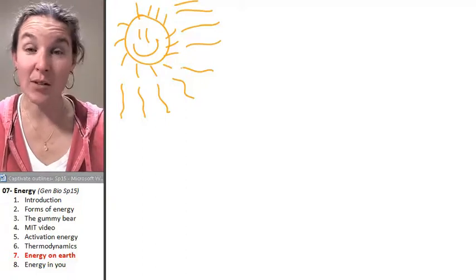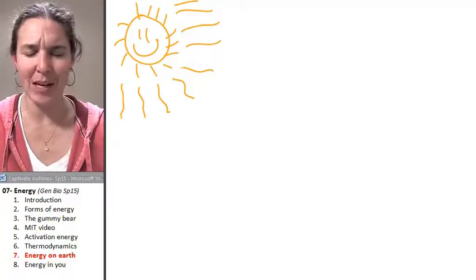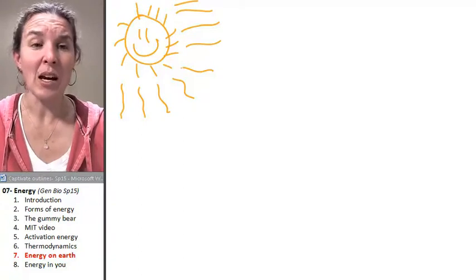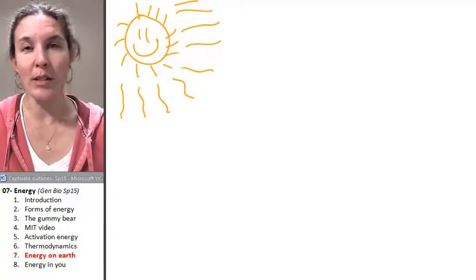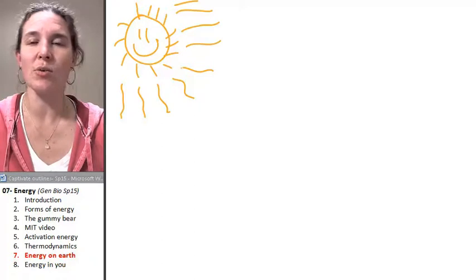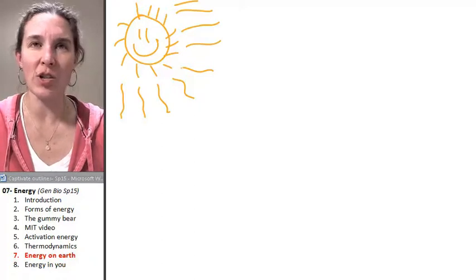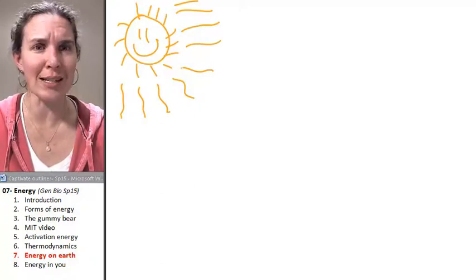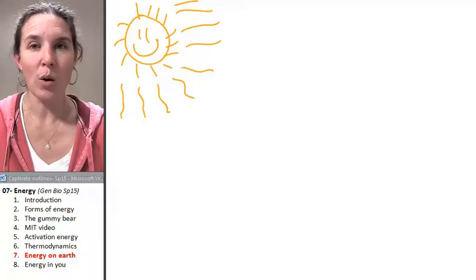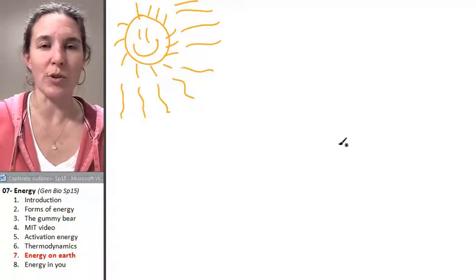When the sun goes out in, I can't remember, eight billion years or something like that, done. Done. Game over. Unless we've figured out a way to manufacture our own light energy that doesn't come, ultimately, from the sun's light energy, we're out of luck. We're screwed.